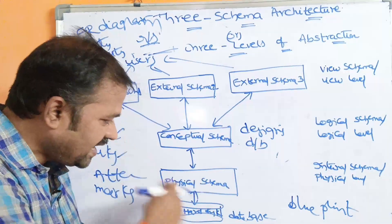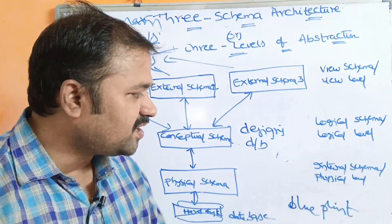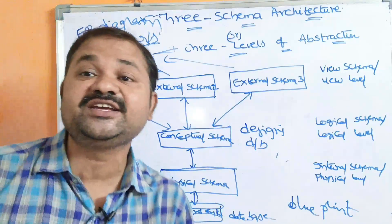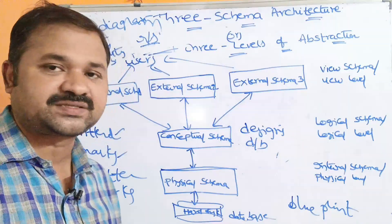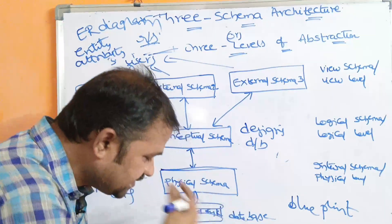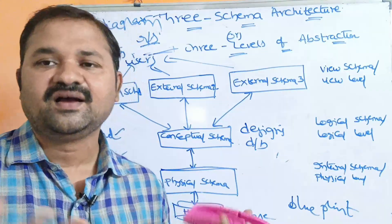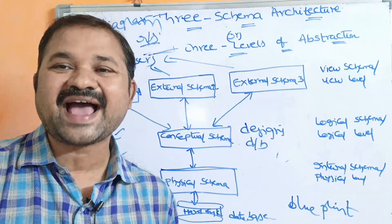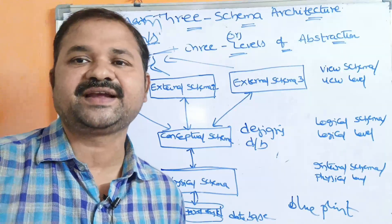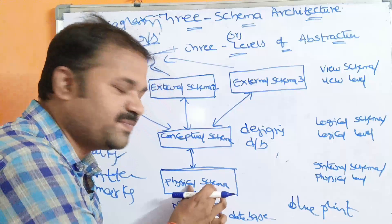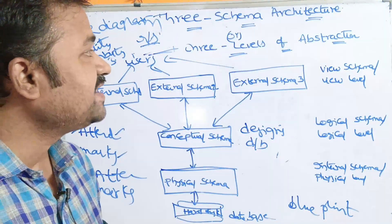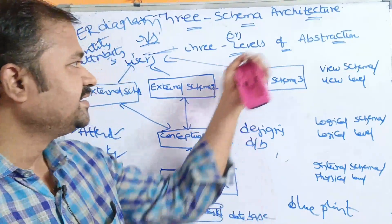The next level is the physical level of abstraction, also called physical schema or internal schema. Physical schema means how the data is actually stored in the corresponding database. Data is stored using magnetic tapes or hard disk, and concepts like B-trees, B+ trees, and hashing are used to store data at specific locations on the hard disk. We will discuss B-trees, B+ trees, and hashing in DBMS later. This is the physical schema — the lowest level of abstraction. So this concludes the three schema architecture or three levels of abstraction.